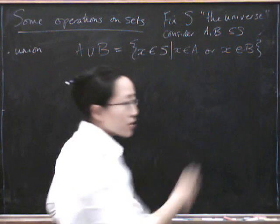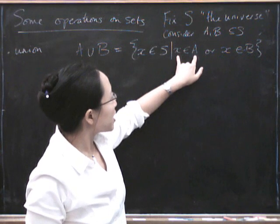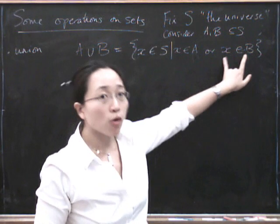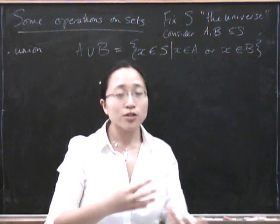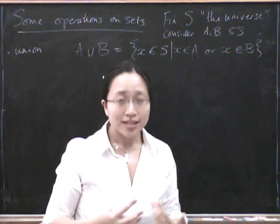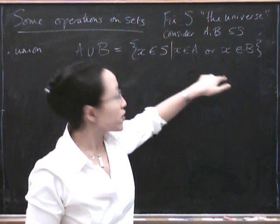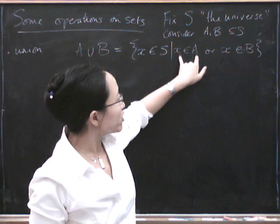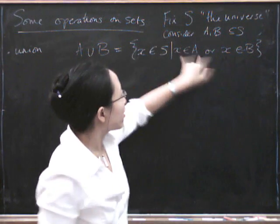This or is what's called an inclusive or, which means that it could be this, this could be true, or this could be true, or both of them could be true. It doesn't mean either or exclusively. So the other kind of or is an exclusive or, where it says precisely one of these things is true, but not both of them. So in this case, you're still in the union if you're in A and you're also in B, but it's also OK if you're only in one of them.